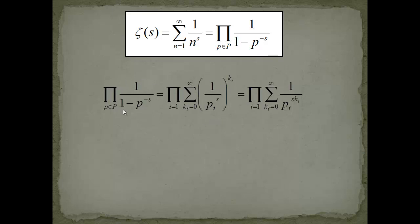I'm using a geometric sum for each part of this product. I write the index k_i going from zero to infinity. The geometric sum says that one over one minus x equals one plus x plus x squared plus x cubed and so forth. So we are adding: one, plus one over p_i to the s, plus one over p_i to the 2s, and so forth. In the next step I take k_i into the exponent so we don't have to use brackets all the time.